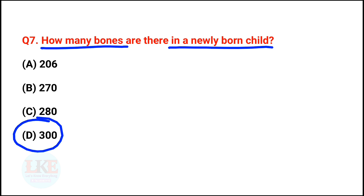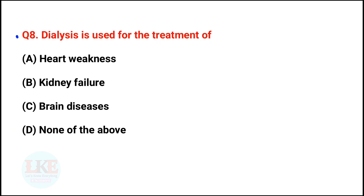A newborn child has 300 bones, whereas an adult human body has only 206 bones — remember that, it is a very important fact. Question number 8: dialysis is used for the treatment of kidney failure.